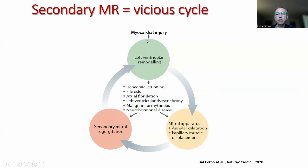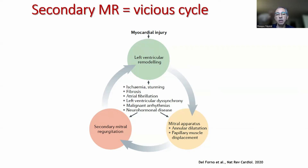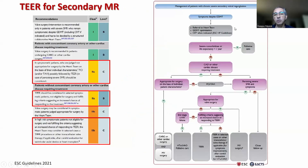In secondary MR, there is generally a myocardial injury with adverse LV remodeling and dilation that causes tethering of the mitral valve apparatus, therefore causing secondary MR. The secondary MR further worsens the LV remodeling and dilation, and again the tethering of the leaflet. So it's a vicious cycle here.